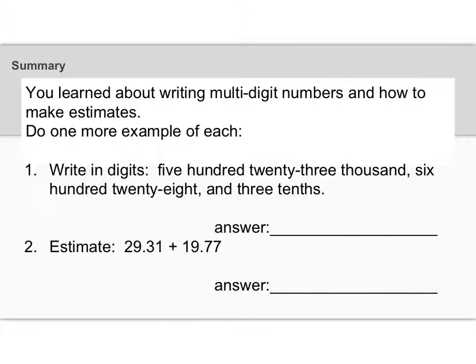Okay, are you ready for the answers? So the first one was write in digits 523,628.3. It goes in that first place because that's the tenth spot in the decimals. All right, and at number two, we're estimating. This 29.31 is kind of close to 30. 19.77 is kind of close to 20. So my estimate for number two is 50.